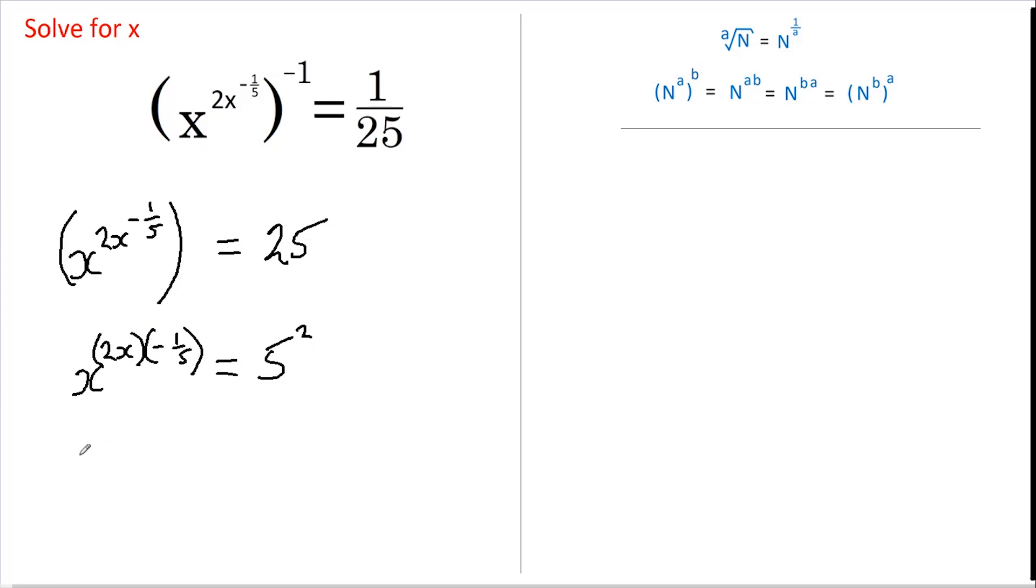So multiplying this out, we get that x to the negative 2/5 of x equals 5 squared, which leaves us with this nasty looking negative 2/5 that we need to get rid of.